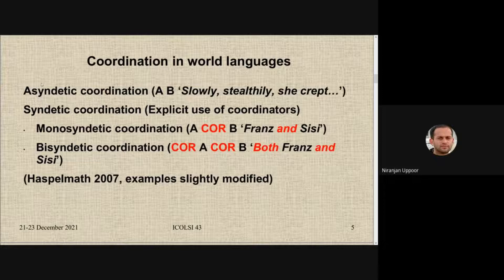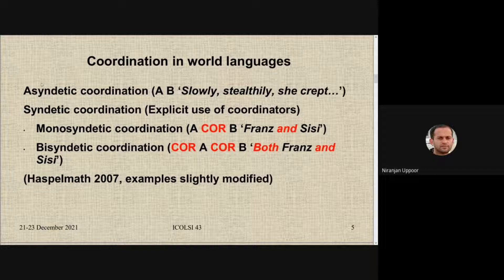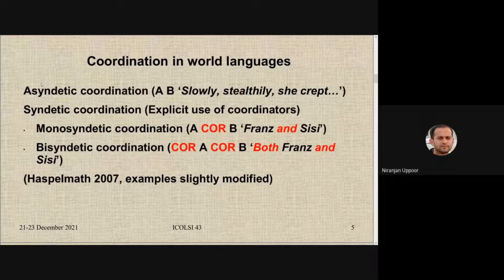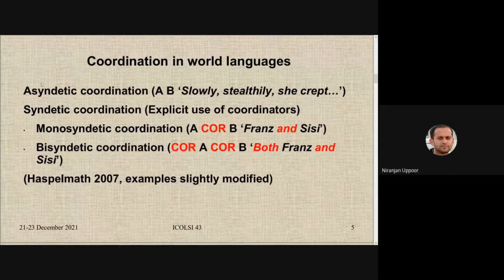Before we get into the language family data, if we look at the typology of coordination there are mainly two varieties: the asyndetic variety and the synthetic variety. The asyndetic variety means no use of any explicit coordinator to coordinate constituents. When we do typology of languages in terms of coordination, we don't look at the asyndetic pattern — rather we look at the synthetic pattern to classify languages.